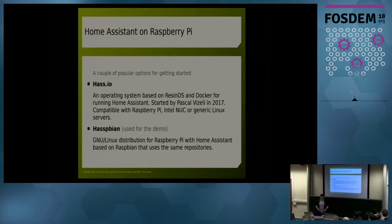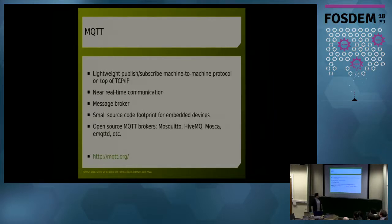Hasbian is based on Raspbian and adds on top of it Home Assistant and some nice scripts to make things easier. For the demo that I showed you, I'm using Hasbian.